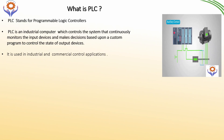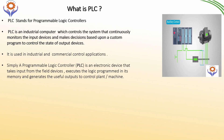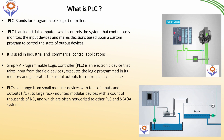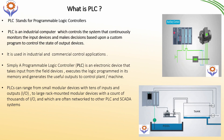PLC can also be defined as an electronic device that takes input from all the field devices, executes the logic by its program, and generates the output to control the plant or machines. PLCs can range from small modular devices with up to 10 input/output devices to large rack-mounted modules with up to thousands of IOs, which often network to other PLCs, SCADA systems, and DCS systems.